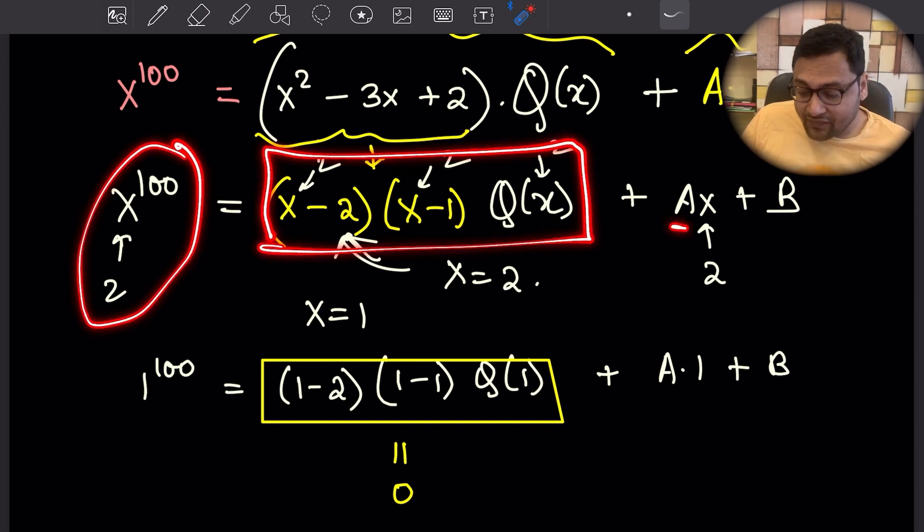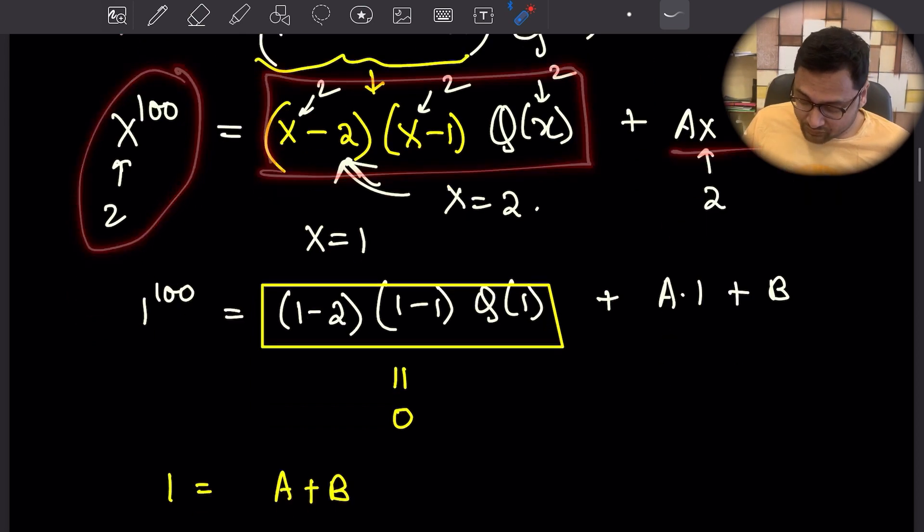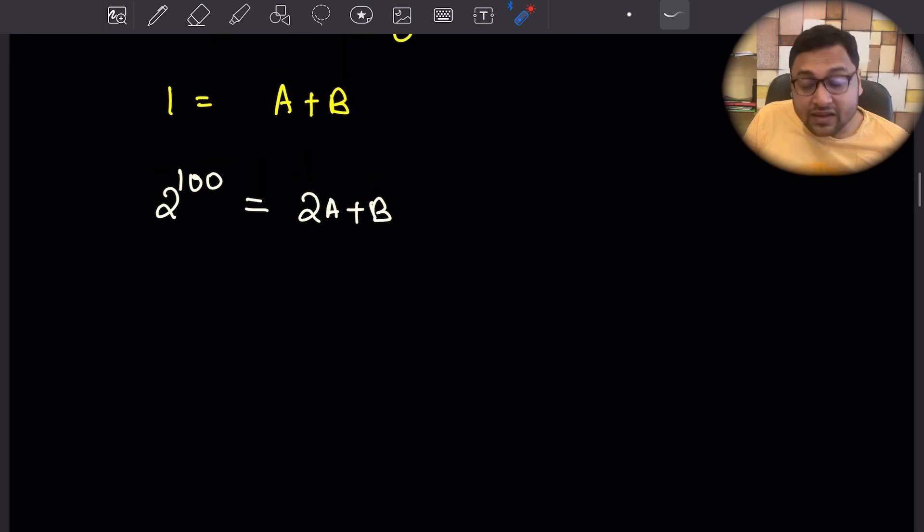So we have a plus b equals 1, and 2a plus b equals 2 to the power 100. Now we have two equations and two variables, and we can find out the value of a and b.